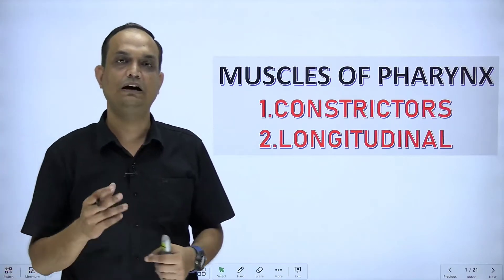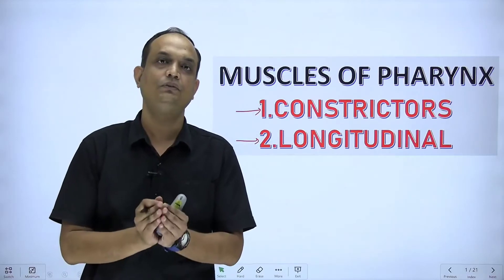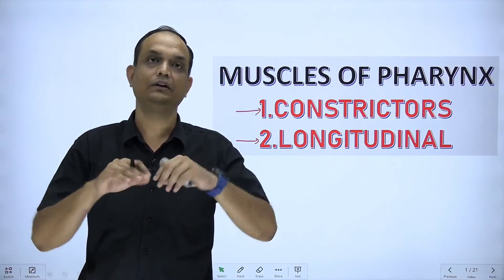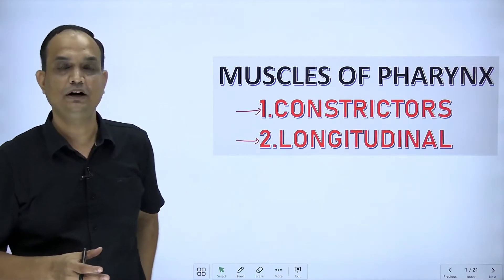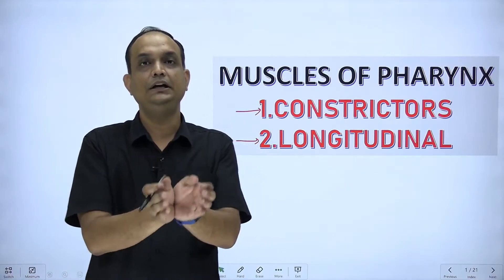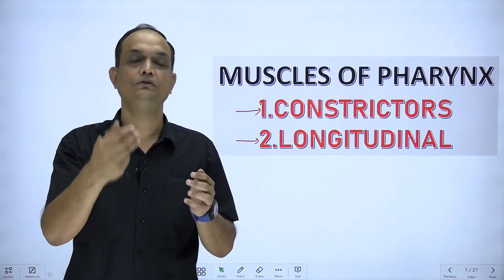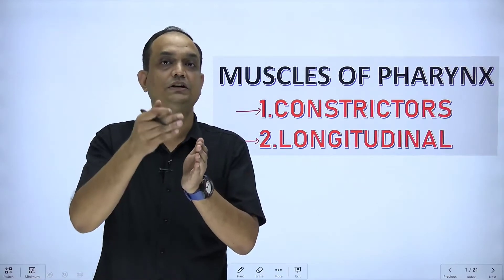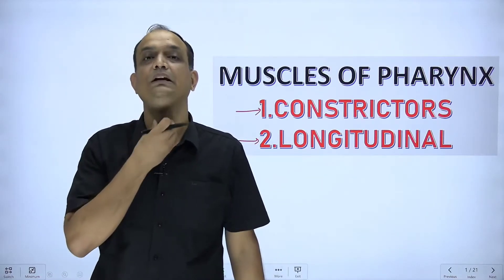The muscles of the pharynx are described by two terms: constrictors of the pharynx and longitudinal muscles of the pharynx. Constrictors form the outer circular layer while longitudinal muscles form the inner layer. Constrictors are ring-shaped muscles, but importantly this muscular tube is open from the anterior side, because anteriorly you have the three openings: nasal cavity, oral cavity, and laryngeal cavity. Due to the nasopharynx, oropharynx, and laryngopharynx communicating with the tube, the constrictors are deficient anteriorly, and their free margins attach to bones or ligaments on the neck.